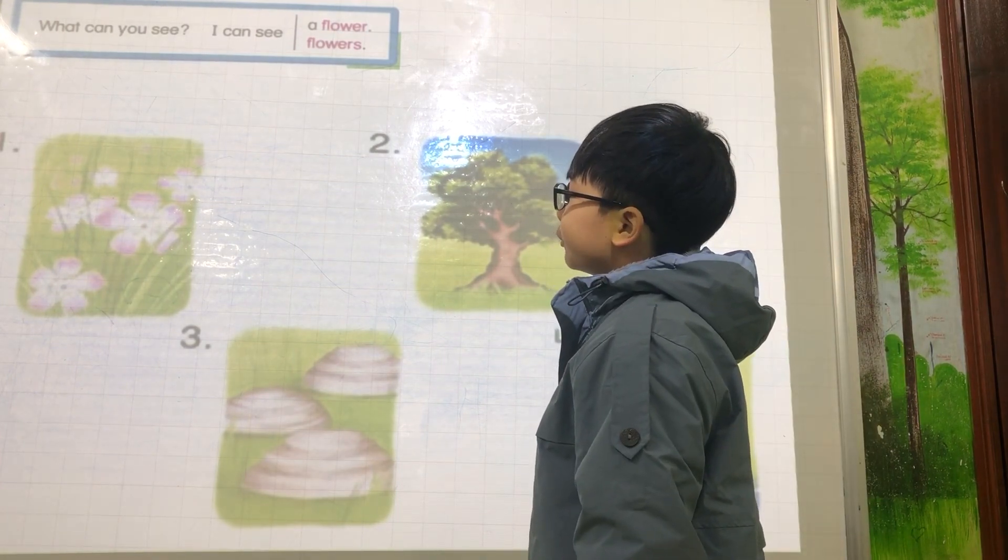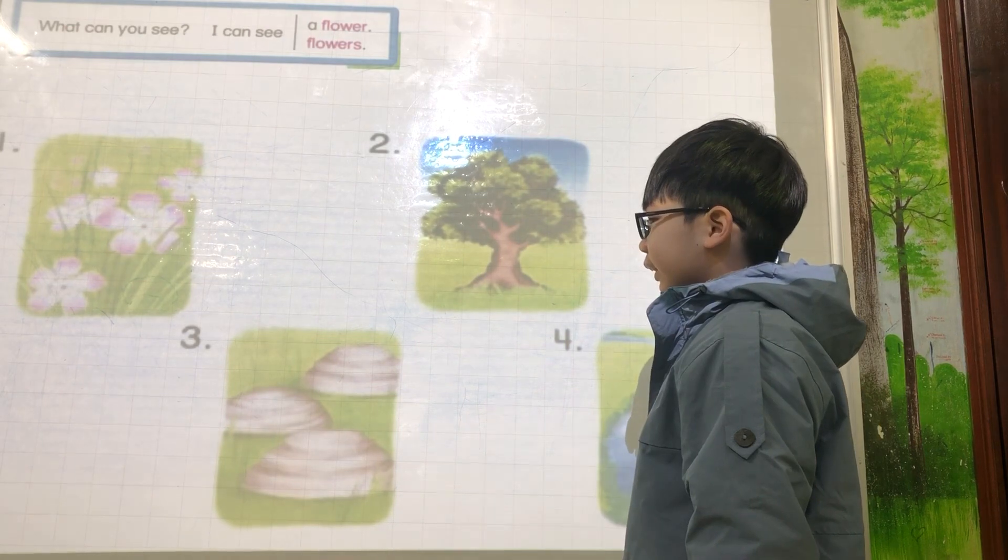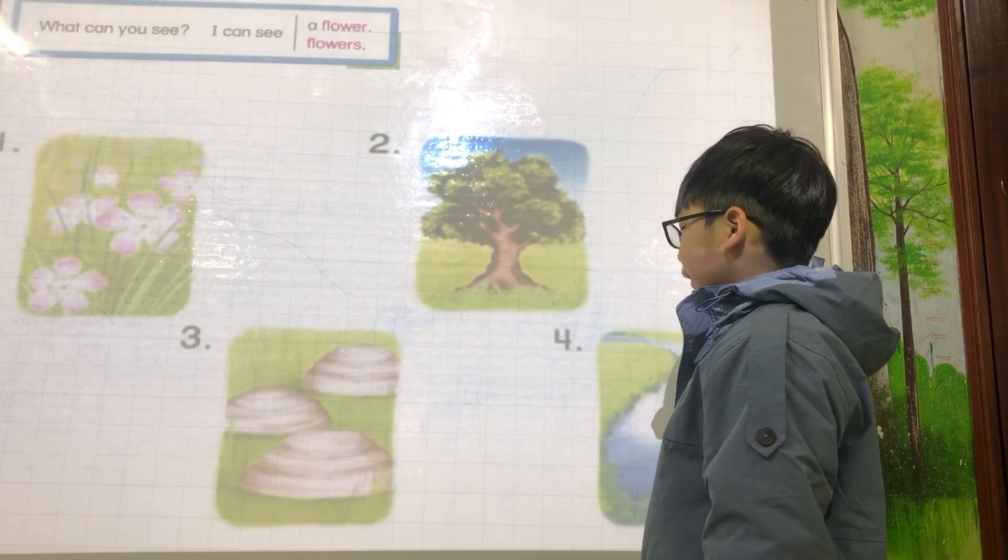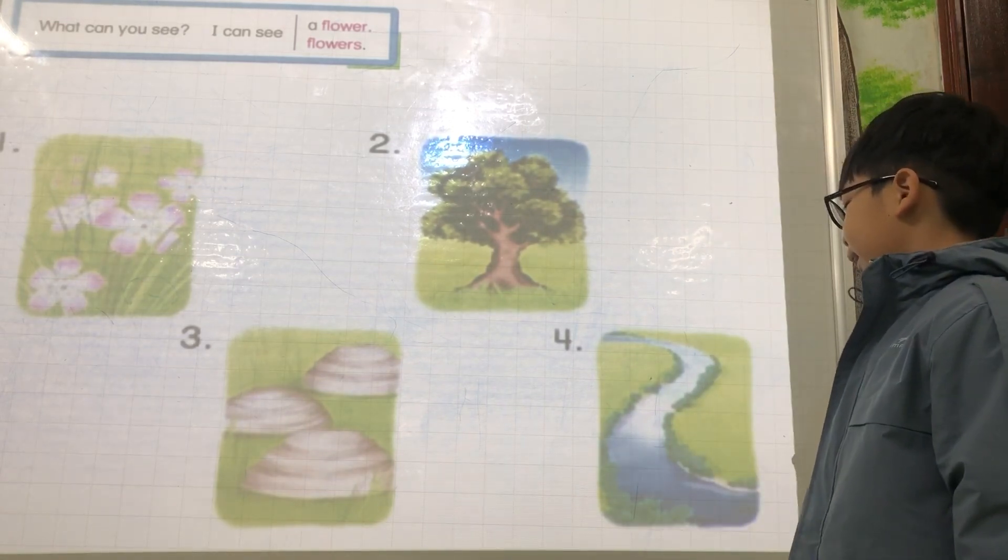What can you see? I can see flowers. What can you see? I can see a tree. What can you see? I can see rocks. What can you see? I can see a river.